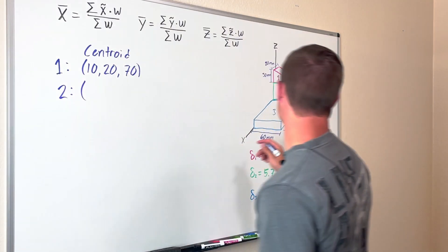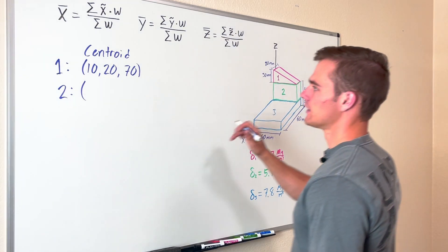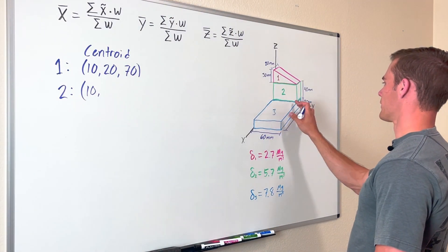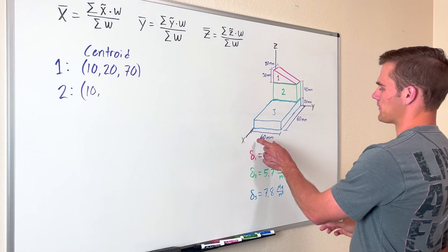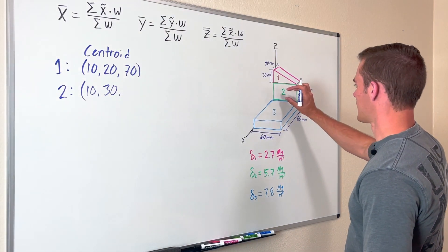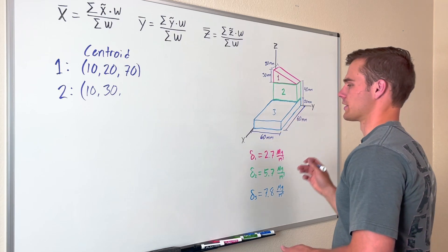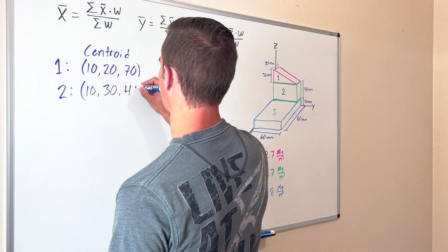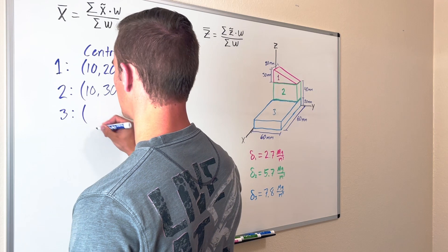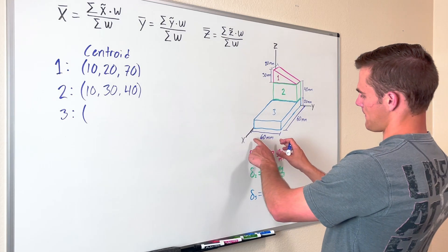For number two, in the X direction it's going to be half the width, which is 20, so that's 10. In the Y direction, half the width of number two is half of 60, so that's 30. Then half the height is 40 divided by 2, which is 20, plus the width of block 3 which is also 20, so that comes out to be 40. Those are the X, Y, and Z coordinates of the center of mass for block number two.